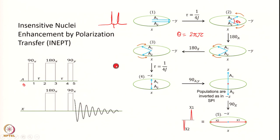During the next 1/4J period, they again move away from each other and another π/2 phase angle is introduced. So after the first τ it was π/2, and after the second τ another π/2 is added, making a total of π. They become opposite to each other — along the X and −Y axes. Now we apply a 90°Y pulse to the A transition, and the two magnetizations along X and −Y come onto the positive and negative Z axis.